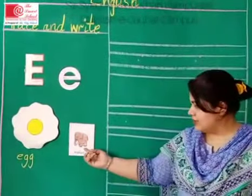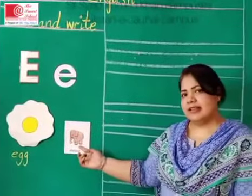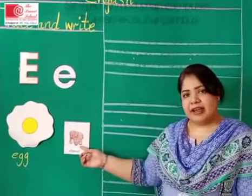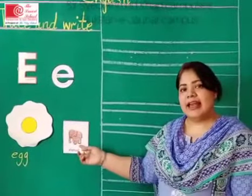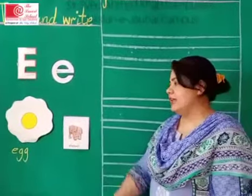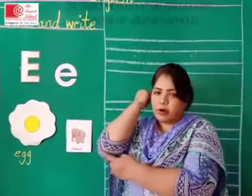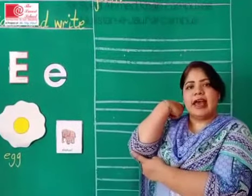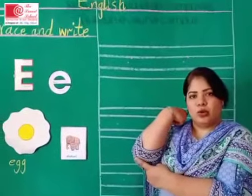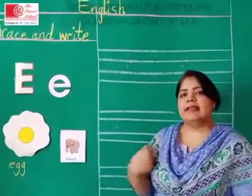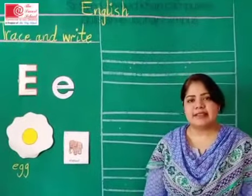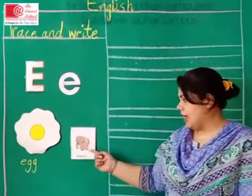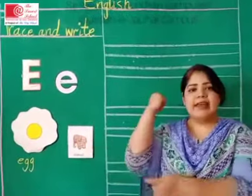And what is this? Which animal is this? This is an elephant. What is this? Elephant. And can you tell me which body part is this? We call it elbow. Elbow. And can you tell me what is the starting sound of egg, elephant, and elbow?